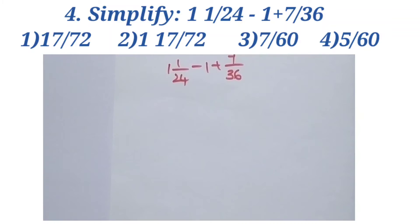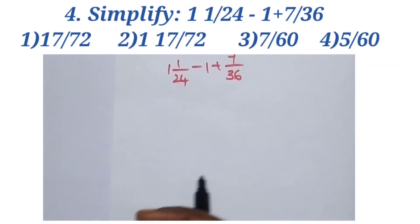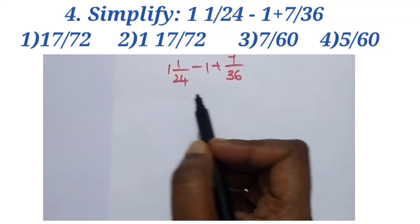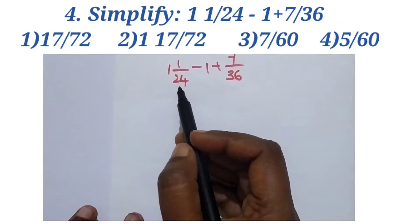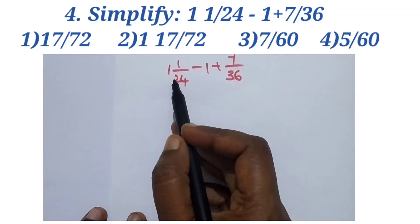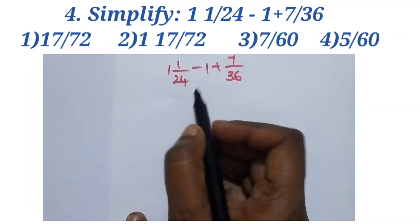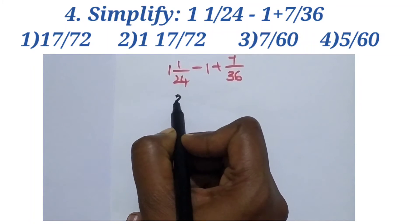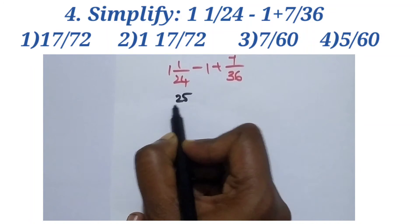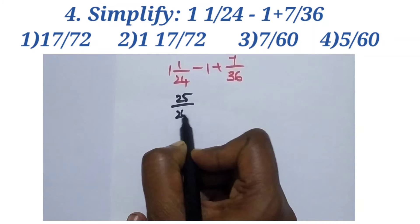Next question: Simplify 1¹/₂₄ minus 1 plus 7/36. First, convert the mixed fraction to improper: 1¹/₂₄ equals 24 plus 1 over 24, which is 25/24. Then we have 25/24 minus 1 plus 7/36.